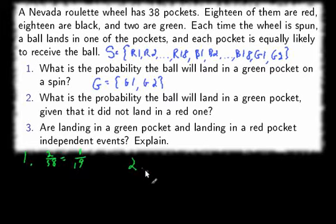Number two, what is the probability the ball will land in a green pocket given that it did not land in a red one? Okay, so we're given that it did not land in a red one. That means we're working with a reduced sample space. We know it did not land in red.